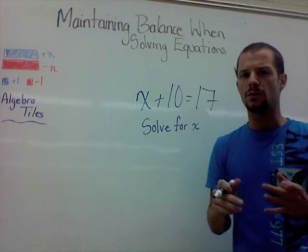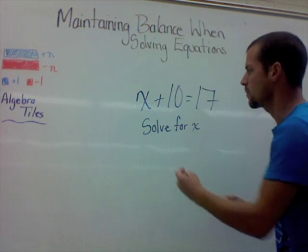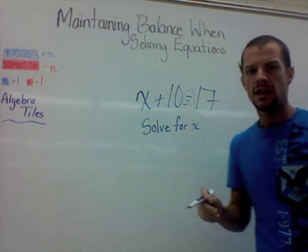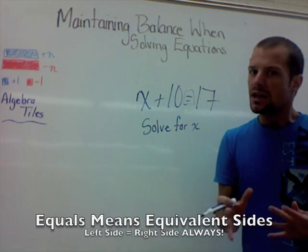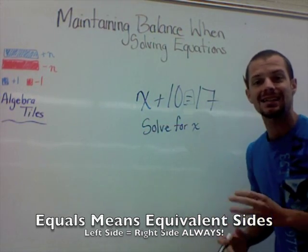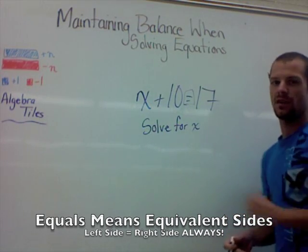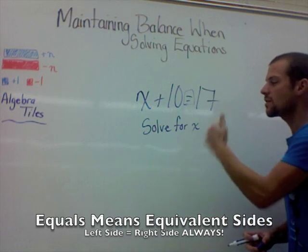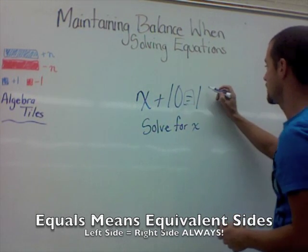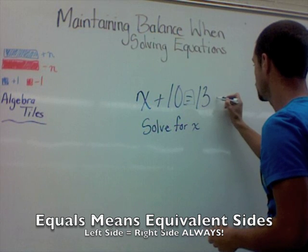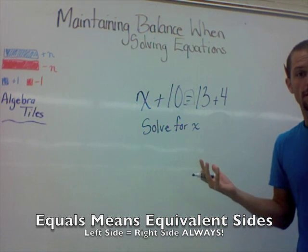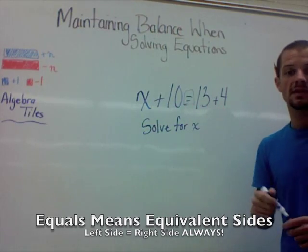A lot of you are used to algebraic expressions where you work to find an answer — where this equal sign means 'find me the answer.' That's not what equals means. Equals means that whatever is on one side of the equation is exactly the same as — it is balanced with — what's on the other side. The left and the right side of the equation are always the same. Both sides still equal 17.